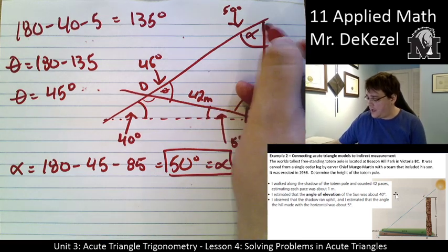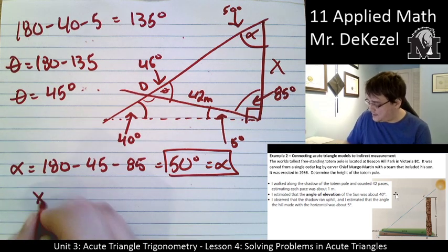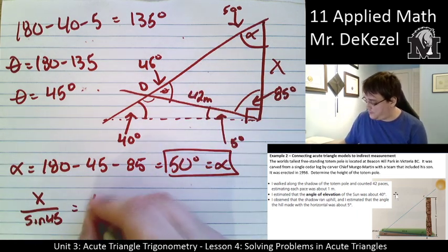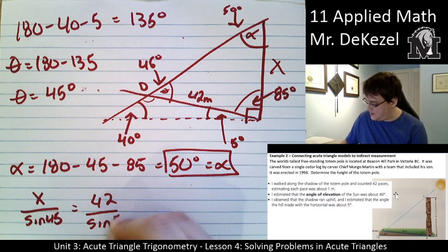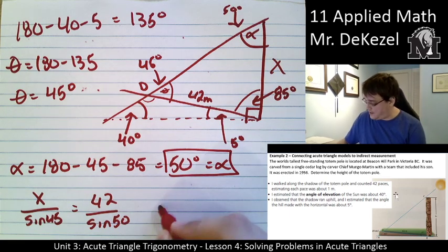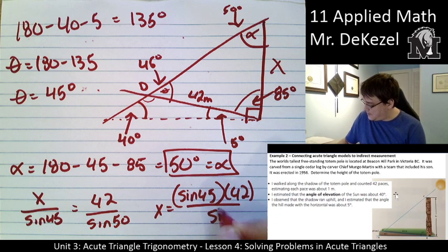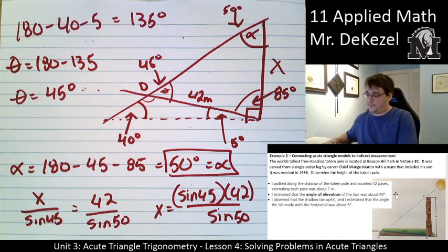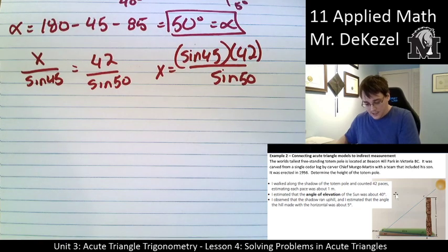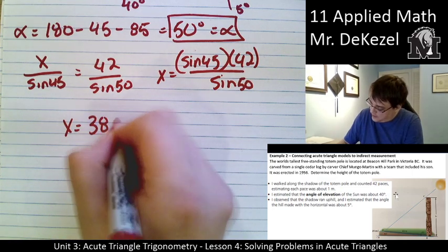But now that I have all this information, I think I can use the sine law to find out what the height of the totem pole is. I have a side and an angle across from one another, and I have the angle that's across from my unknown. So x over the sine of 45, right across from it, would be equal to 42 divided by the sine of 50, the angle that is across from it. I can rearrange to find x. x equals sine of 45 times 42 divided by the sine of 50.